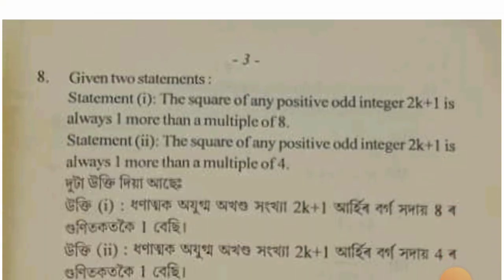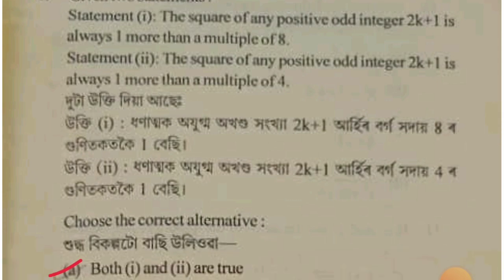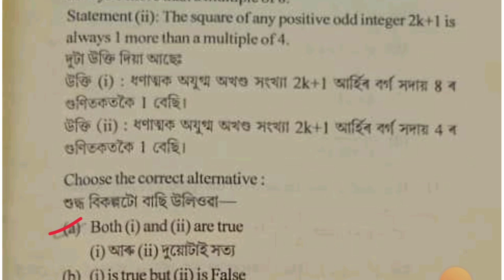Now, considering positive odd integers of the form 2k+1, the square will always be 1 more than a multiple of 8. If k=2, then 2k+1 = 5, and 5² = 25 — which is 3×8 + 1. If k=2, 2k+1 = 3, then 9. So the square of odd integers satisfies this form. The answer involves m into n option.